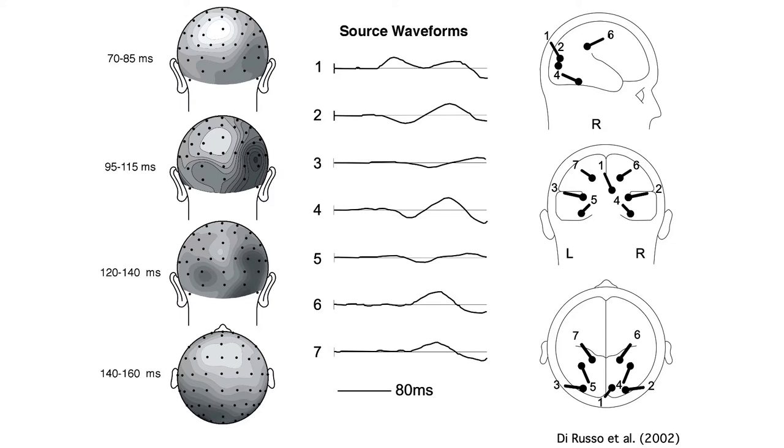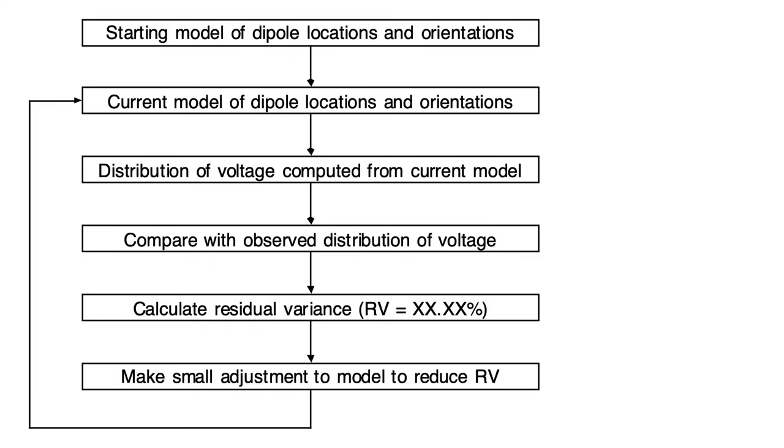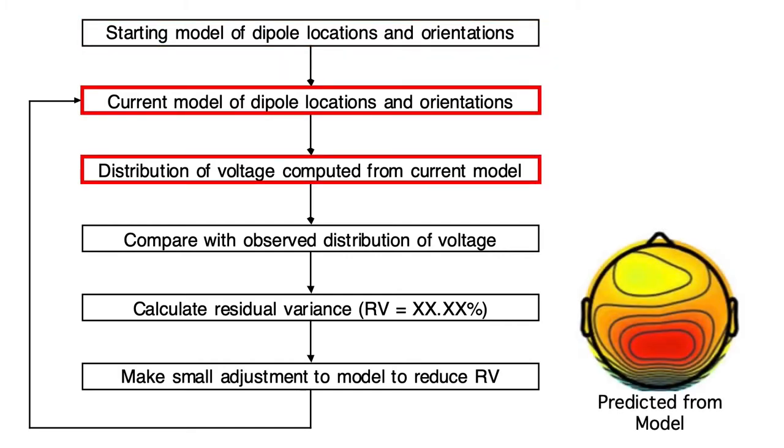The locations, orientations, and source waveforms are estimated by means of an iterative error minimization approach. You typically start with a random set of locations and orientations. On each iteration, you use a forward solution to compute the predicted scalp distribution from the model.